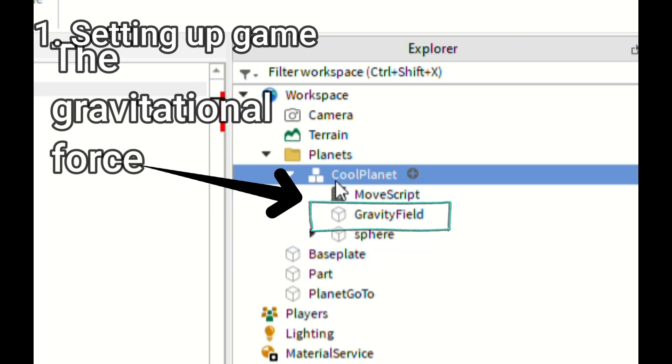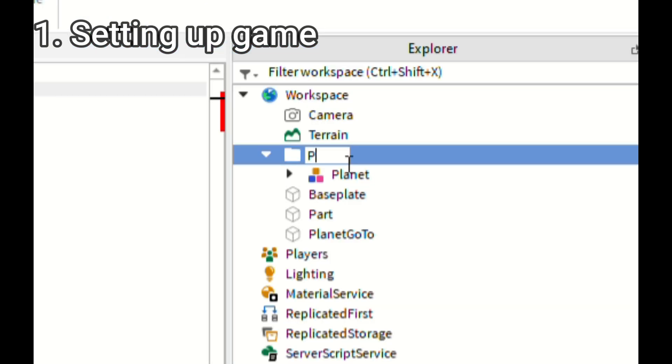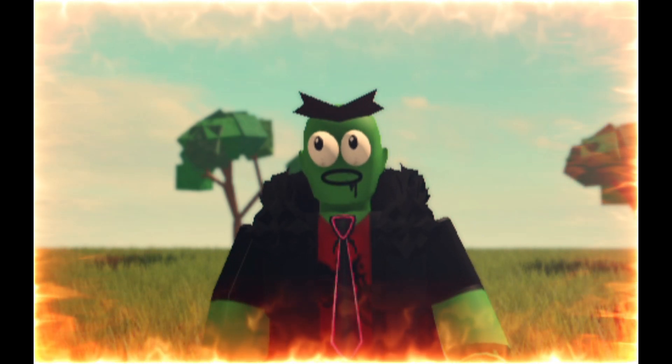Copy and paste sphere, call the copy gravity field and make it invisible while size multiplied by 5. Place the planet model in a folder and name it planets. That is only setting up the game though.